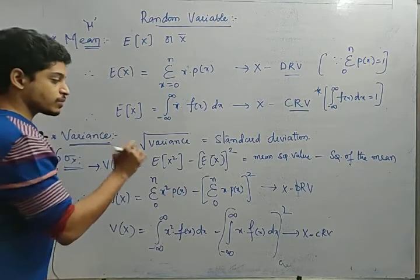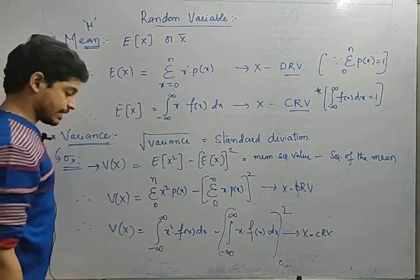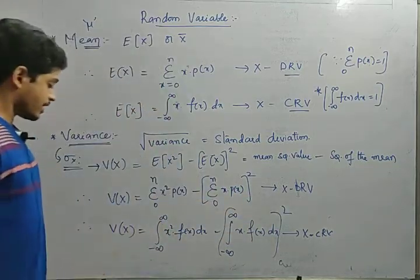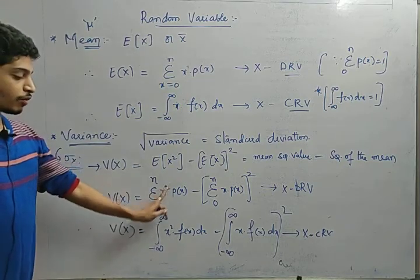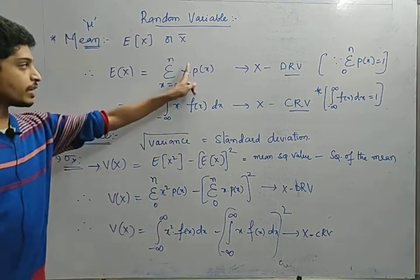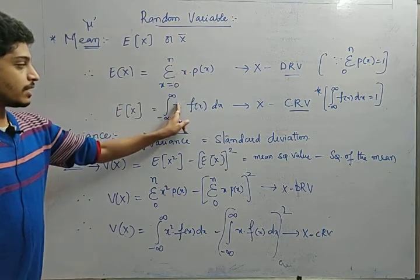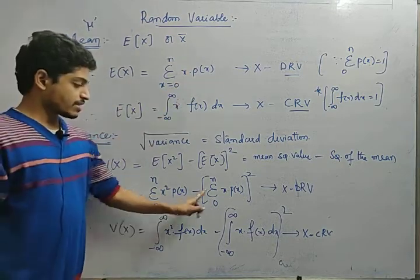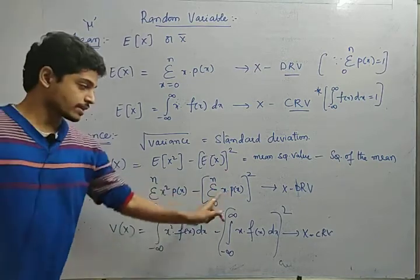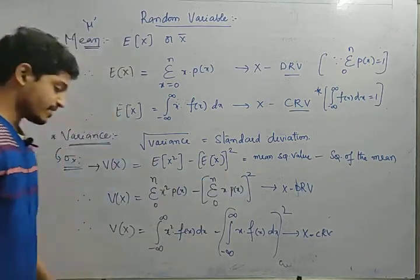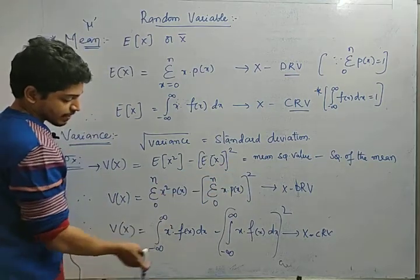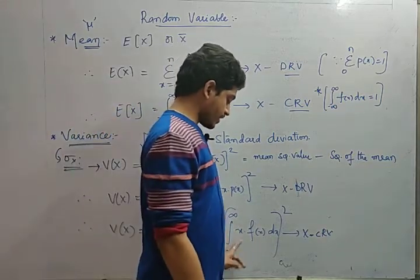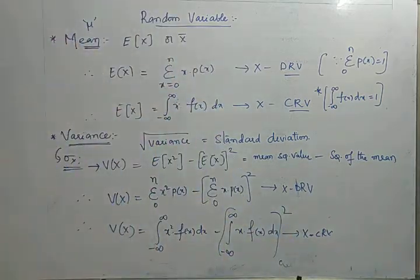Taking the square root gives the standard deviation. For a discrete random variable, the variance formula is: sigma from 0 to n of x² times P(x), minus [sigma from 0 to n of x times P(x)]². For a continuous random variable, the variance of X is: the integral from minus infinity to infinity of x² f(x) dx, minus [the integral from minus infinity to infinity of x f(x) dx]².